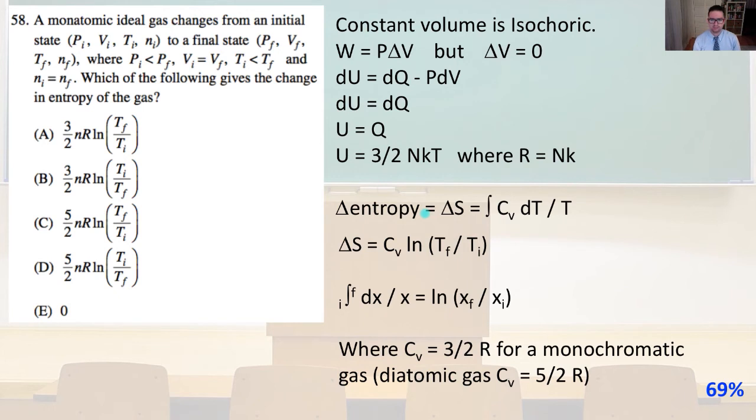The change in entropy is going to equal delta s is going to equal the integral of c_v, the specific heat, times dt over t. So the change in entropy is going to be the specific heat times the natural logarithm of the temperature final over the temperature initial, and this integral solution is because when you have a definite integral from the initial to the final state of dx over x, it's going to equal the natural logarithm of x final divided by x initial.